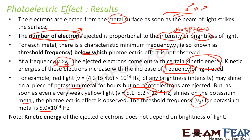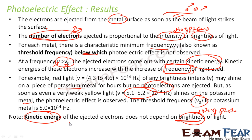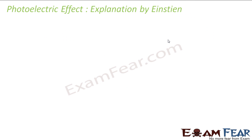The number of electrons ejected depends on the number of photons of light you are putting — that is the intensity or brightness of light. But the kinetic energy of the electron does not depend on the number of photons. That depends on the frequency. Kinetic energy depends on frequency of light, but the number of electrons ejected depends on the intensity of light.